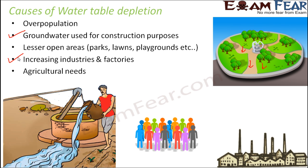Regarding agricultural needs, irrigation — watering of crops — is an important part of agriculture. When there is inadequate rainfall, especially in villages, farmers depend on groundwater for irrigation. Traditional methods of irrigation result in a lot of water wastage, as seen when a person carries water from a well and water spills while moving. Modern methods like the drip system supply only the required amount of water directly to plants, economically using water.